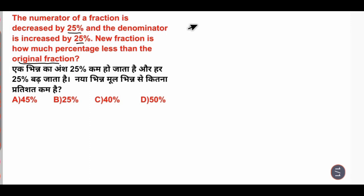The denominator increases by 25%, so 100% plus 25% equals 125%. The new fraction is 75 over 125. If we simplify by dividing both by 25, we get 3 over 5.